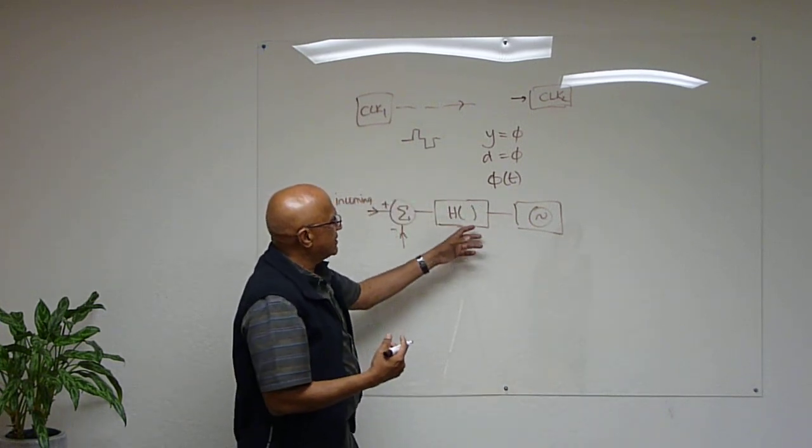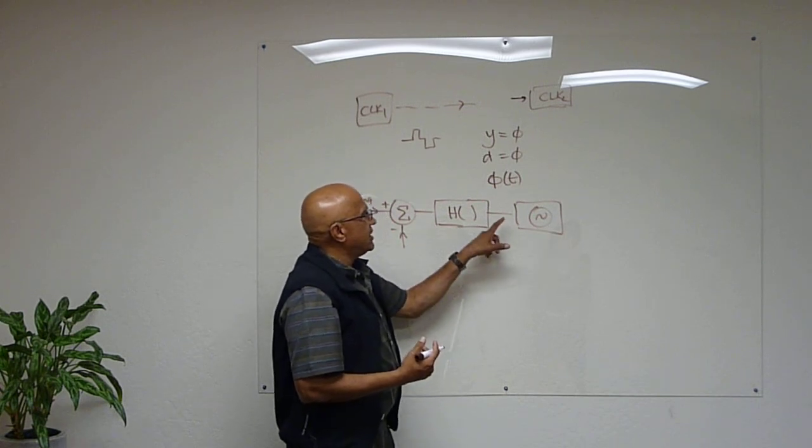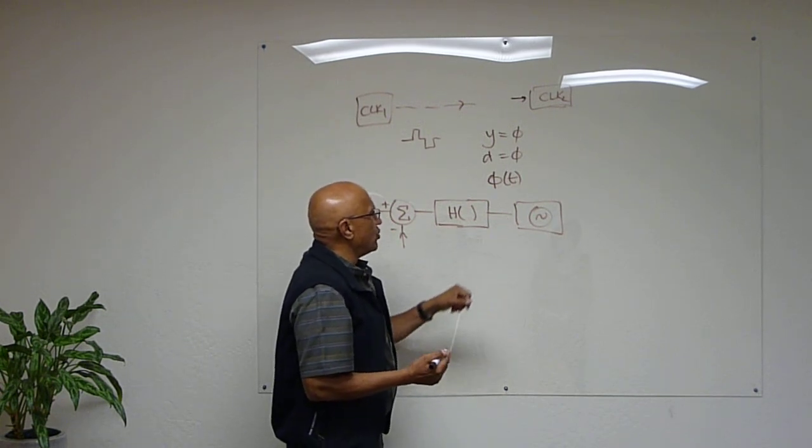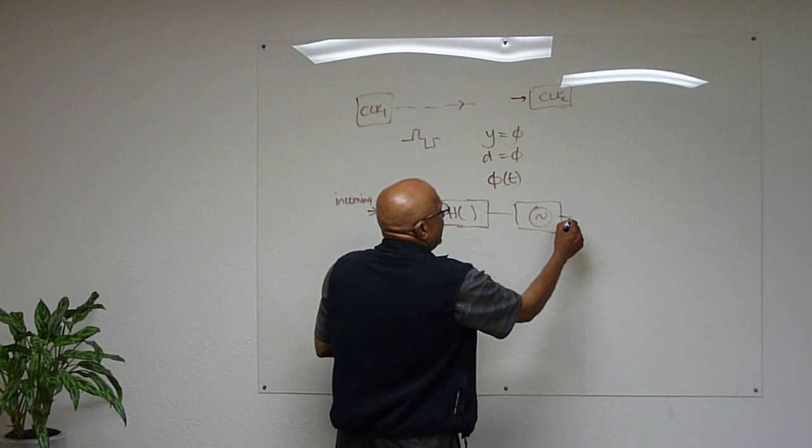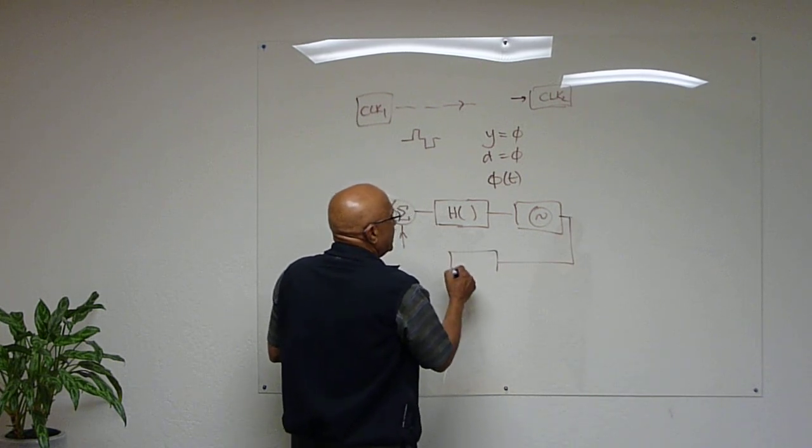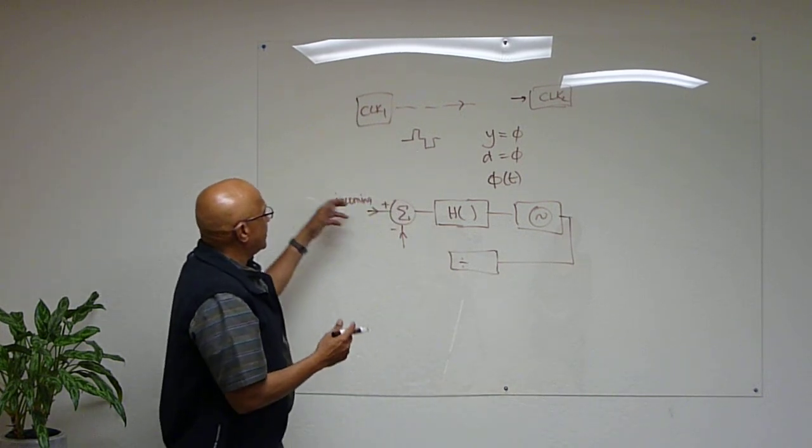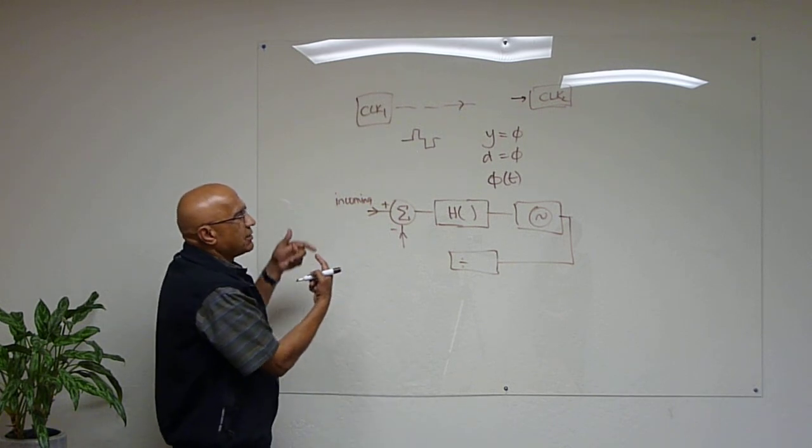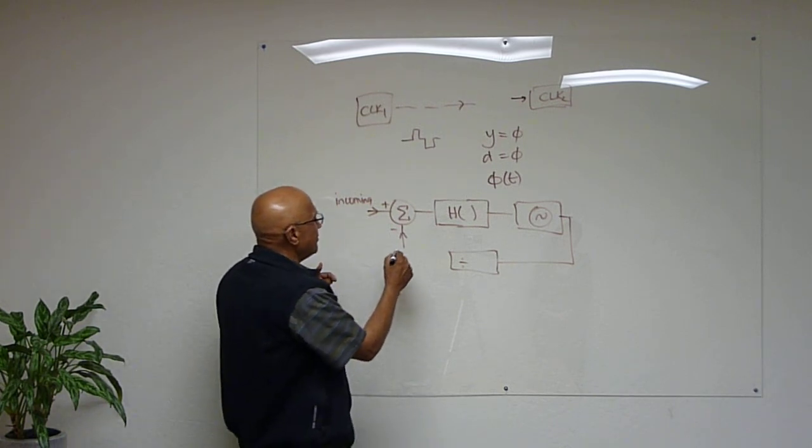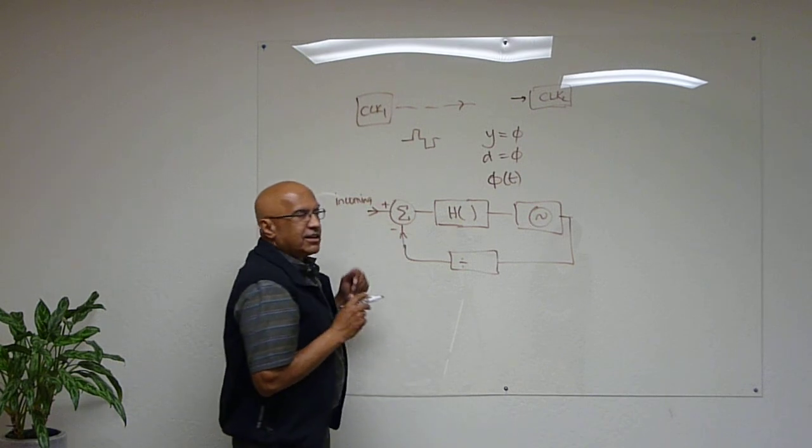I'll call this a VCXO, whose frequency is governed by the voltage input. And from that oscillator, there may be a divide of some kind to make sure that the two periods at which you're comparing the two signals is the same, and that's how you generate the error.